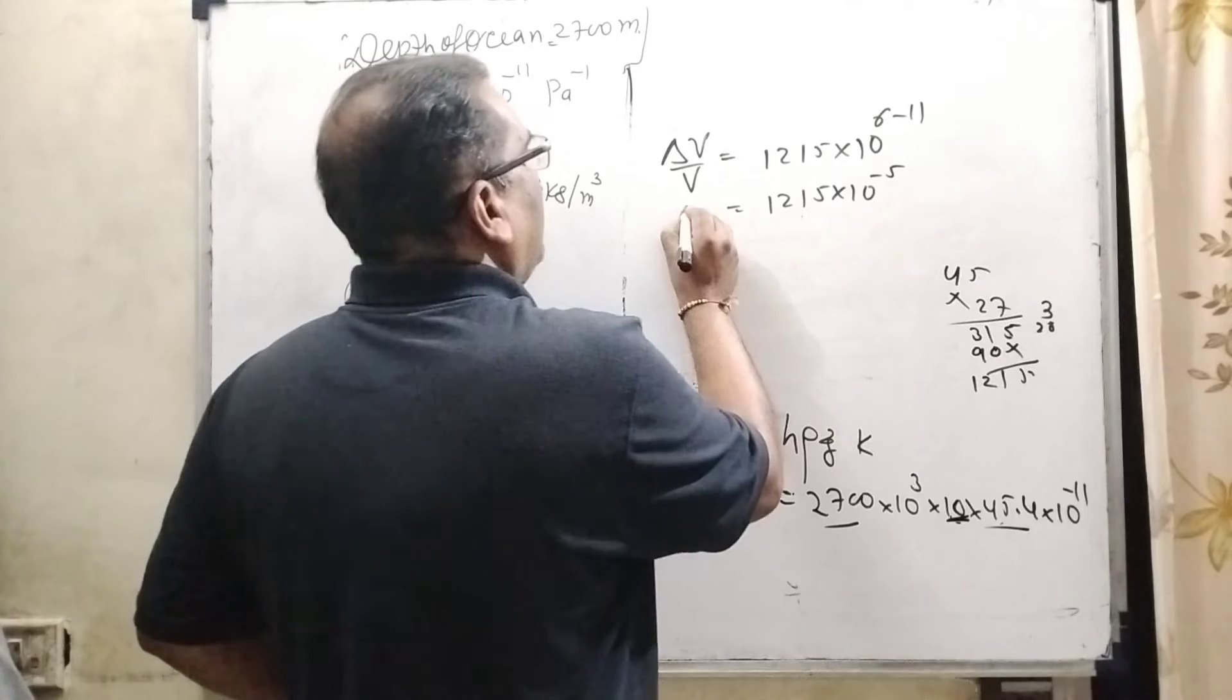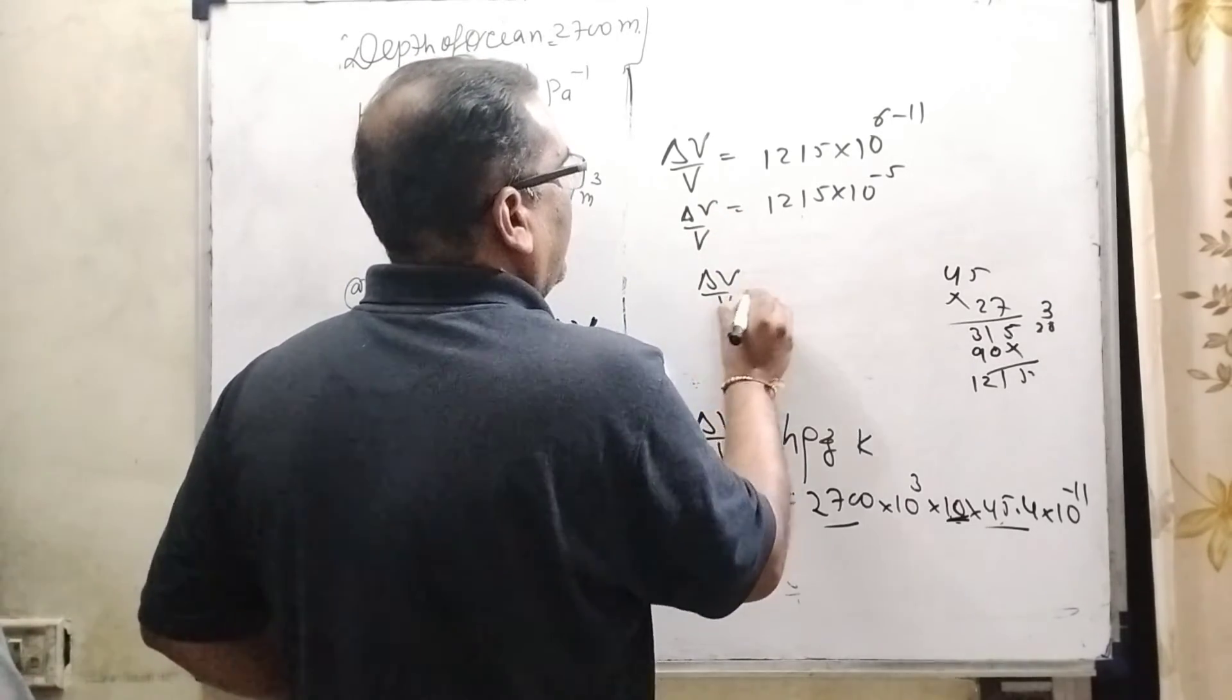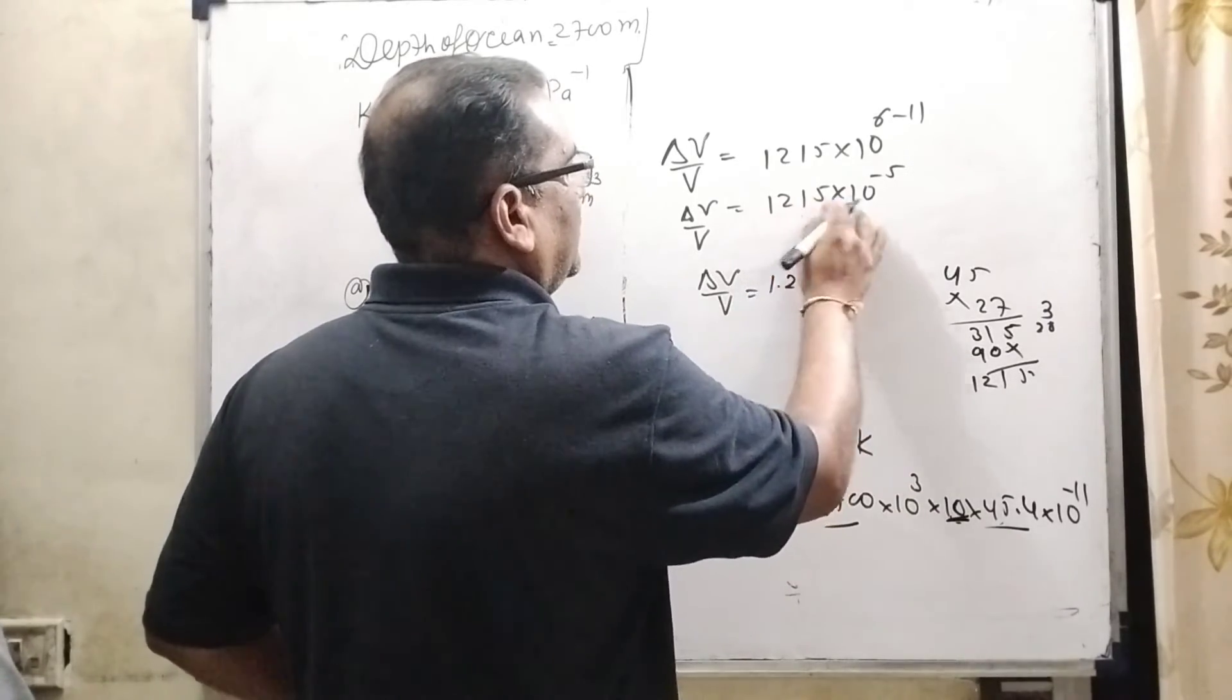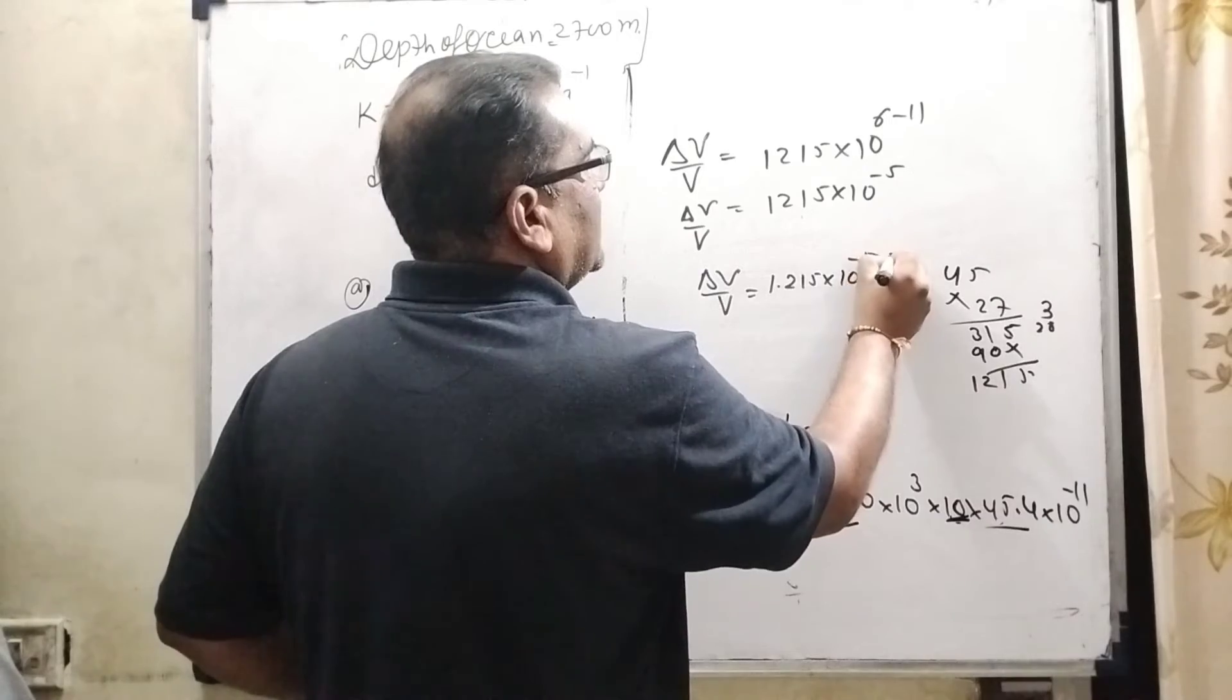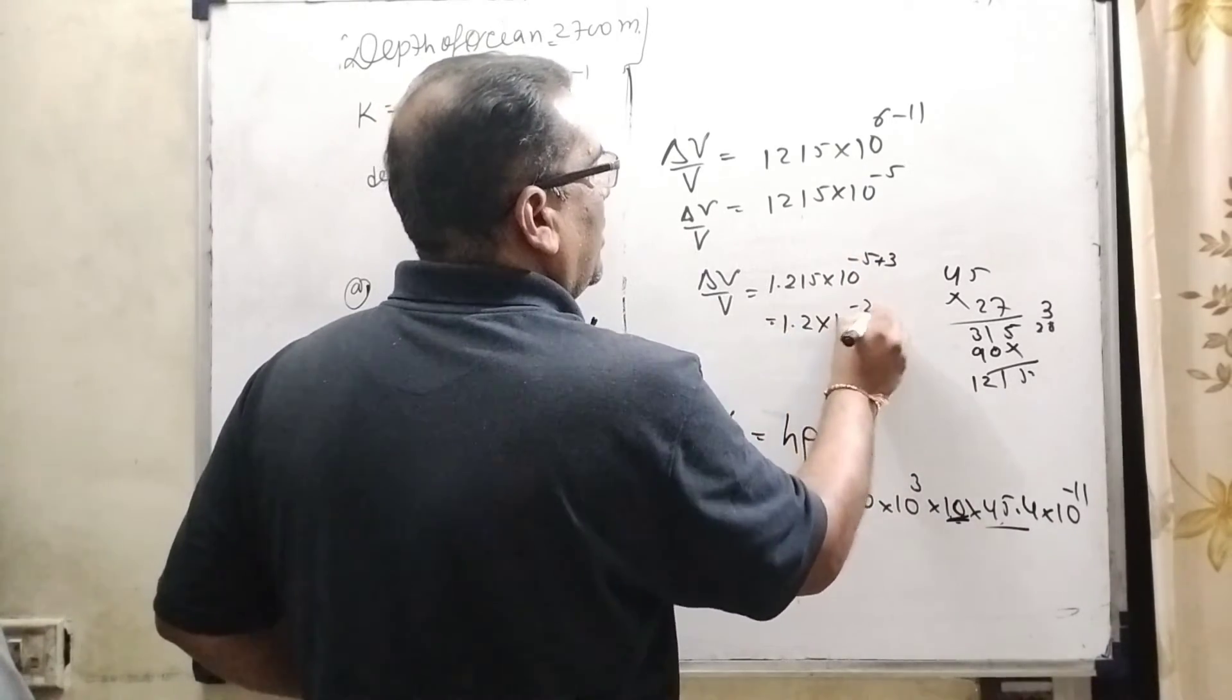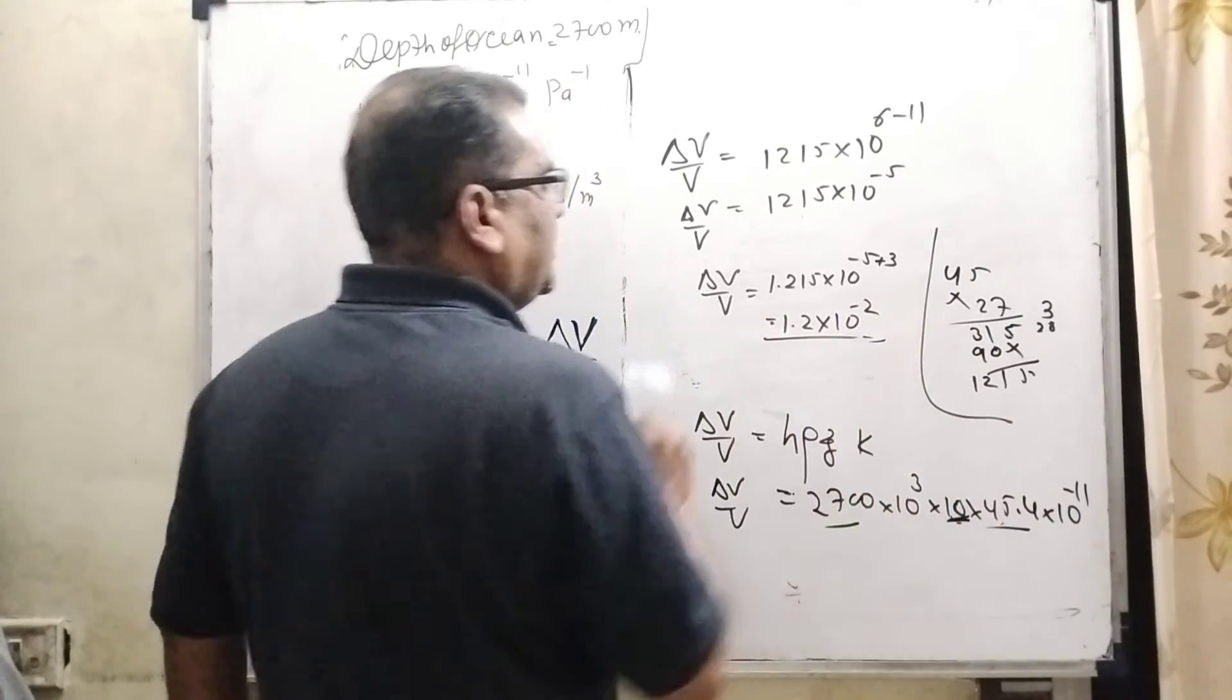Then by scientific notation, it can be written as ΔV/V = 1.215 × 10^-5, 1, 2, 3. So -5 + 3, then it can be written as 1.2 × 10^-2. It is a ratio property, so therefore there is no need to require any unit.